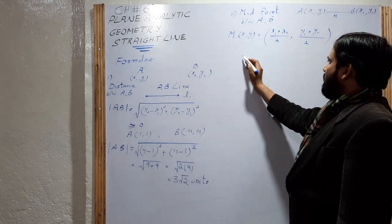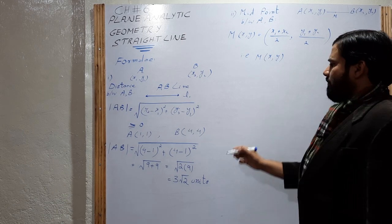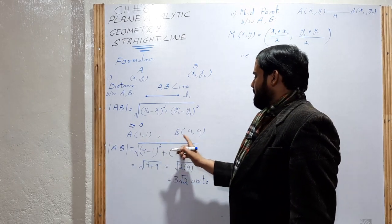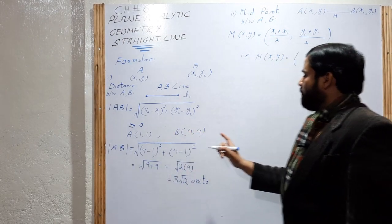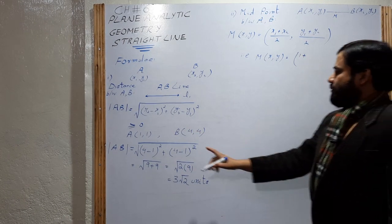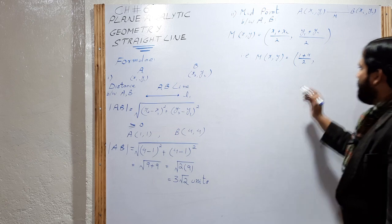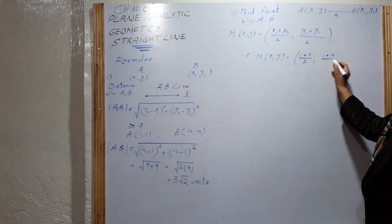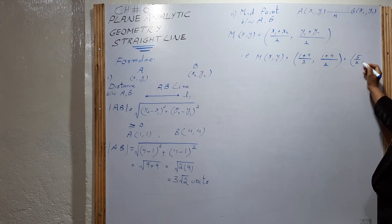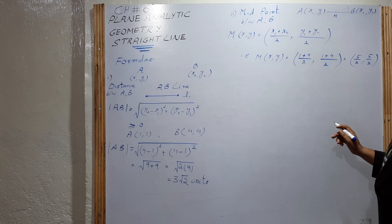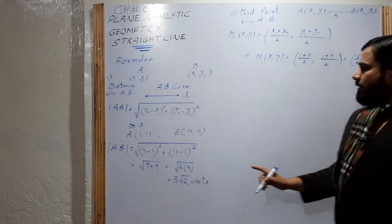For example, find the midpoint where A is (1, 1) and B is (4, 4). Using the formula: x = (1 + 4)/2, y = (1 + 4)/2. The midpoint M is (5/2, 5/2). It means that M is the midpoint between A and B.